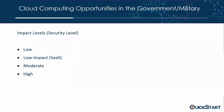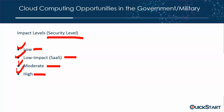There are also different impact levels, which are essentially security levels. Similar to the world of government contracting where you have top secret, secret, classified, and unclassified, impact levels are based on the number of controls you need to validate and comply with — not so much whether something is classified, but what level of controls you have to work through.